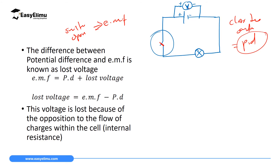The potential difference you read when the switch is closed will be lower than what you read before you switched on the switch, because the bulb has used some of the energy or voltage. The voltage which is used when the bulb is on and the switch is closed is called the lost voltage. Lost voltage is lost in two ways: one, it is lost due to the energy used by the bulb; and two, it is lost due to the internal resistance of the cell and the wire.